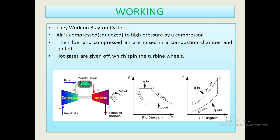Working of gas turbines. They work on the Brayton Cycle. This is a schematic diagram of an open-cycle gas turbine. Air is compressed to high pressure by a compressor. Then fuel and compressed air are mixed in a combustion chamber and ignited. Hot gases are given off which spin the turbine blades. This one is the pressure versus volume diagram, and this one is the temperature versus entropy diagram.